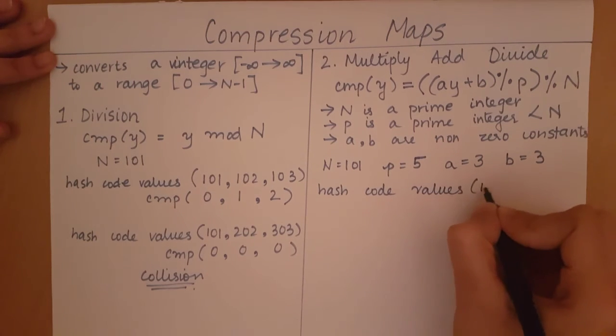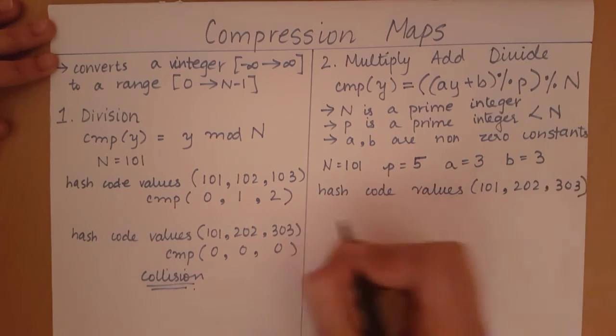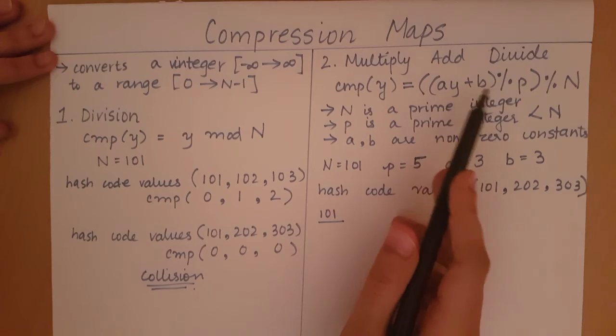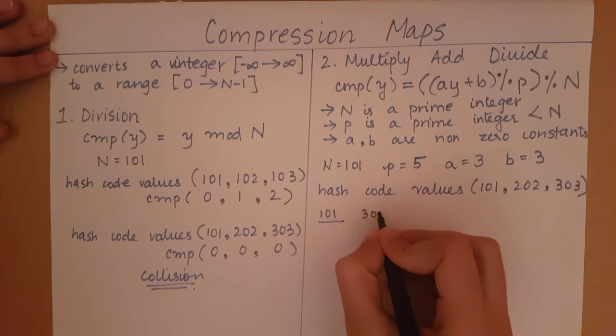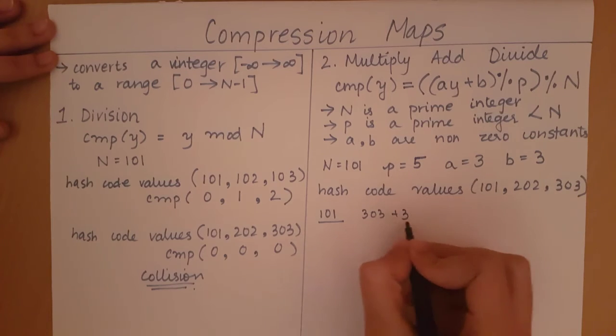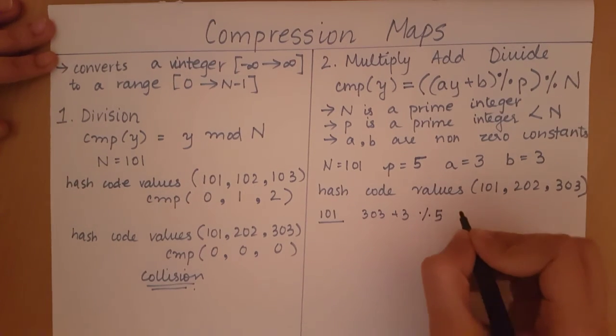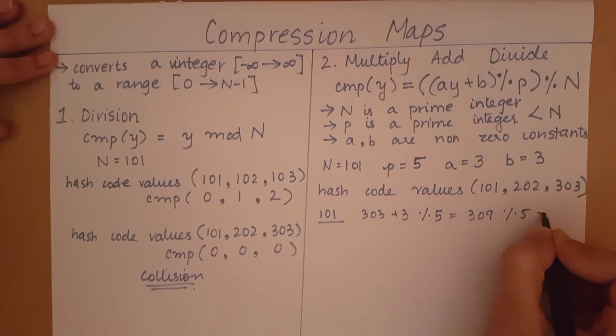So now let's see the hash code values. We have 101, 202, 303. Let's calculate for 101. Now a times y plus b. This is equal to 303 plus 3, which is equal to 309 mod 5. So this is equal to 309 mod 5, which is going to give me 4.